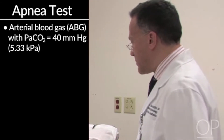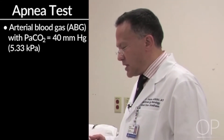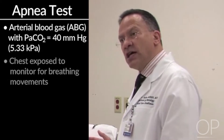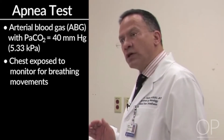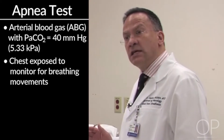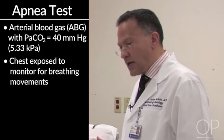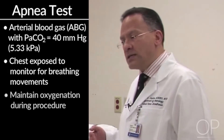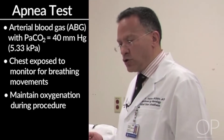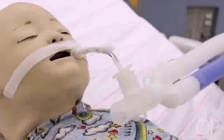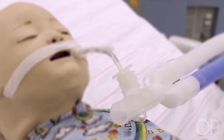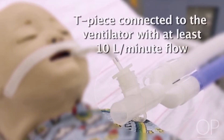We then proceed to the apnea test and there are a couple of ways of doing this. We need to have the child's chest exposed so that we can actually see any breathing movements, and then we want to try and maintain oxygenation during the procedure. After disconnecting the child from the ventilator, we can use a T-piece connected to the ventilator with at least 10 liters per minute flow through that.